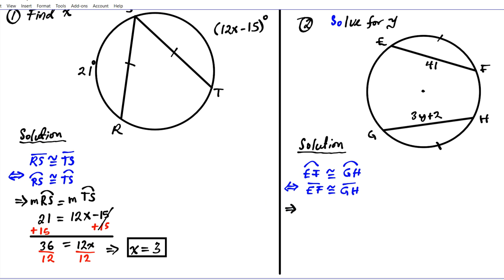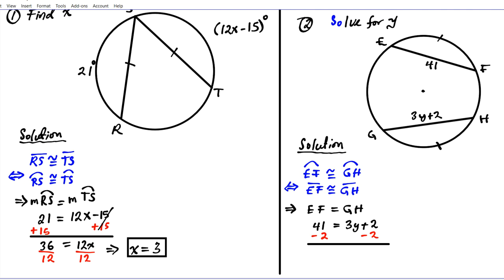Since chord EF and chord GH are congruent, their lengths are equal: EF equals GH. Substituting, EF is 41 units and GH is the quantity 3y plus 2. Subtract 2 from both sides to get 39 equals 3y, then divide both sides by 3. y equals 39 divided by 3, which is 13. That's the answer to question two.